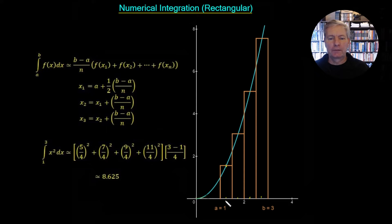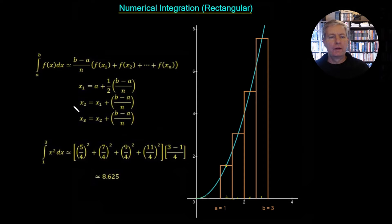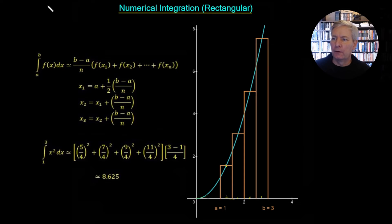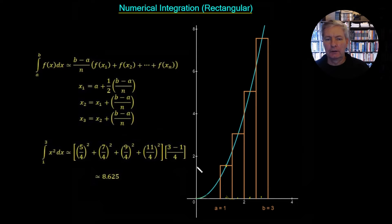To get the next point x2, we simply take x1 and add on the distance dx, where dx is b minus a upon n. That gives us x2, and we get x3 by taking x2 and adding b minus a upon n. So this is our algorithm that we're going to use to generate the approximation to the area under a curve.